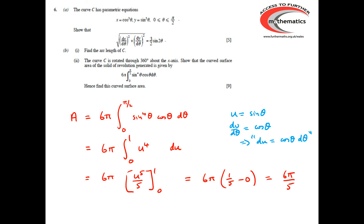For the mark scheme on this question: a method mark and answer mark for using the chain rule to find dx/dθ and dy/dθ, then three marks for obtaining the given answer for the square root expression. Finding the arc length of C was worth four marks — two for the correct integral and two for evaluating it to get 3/2. For the curved surface area, two marks for reaching the correct integral and three marks for evaluating it.